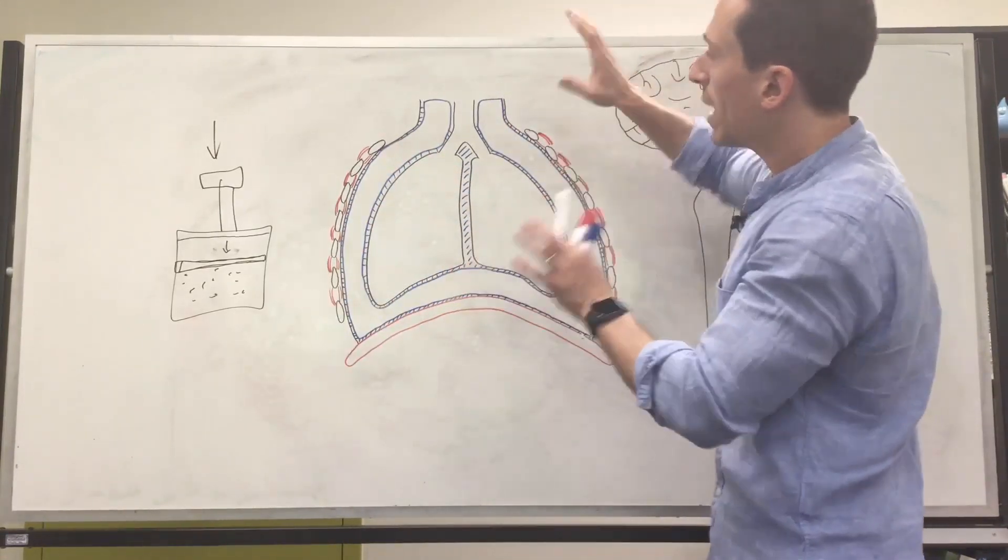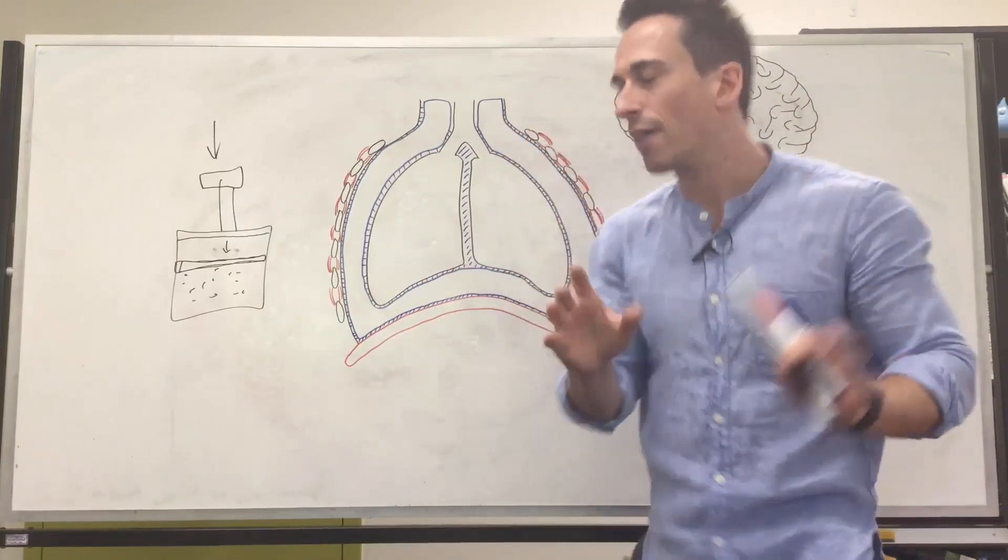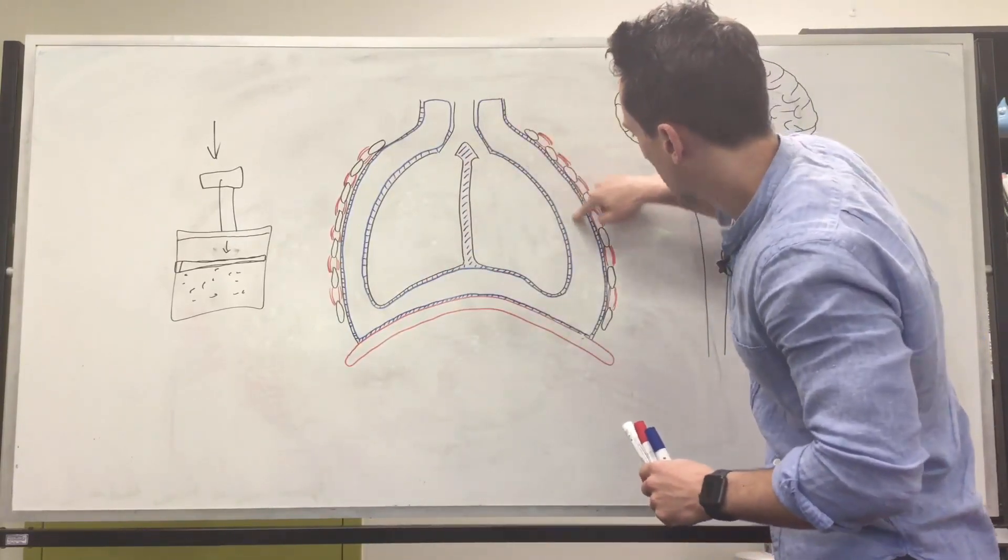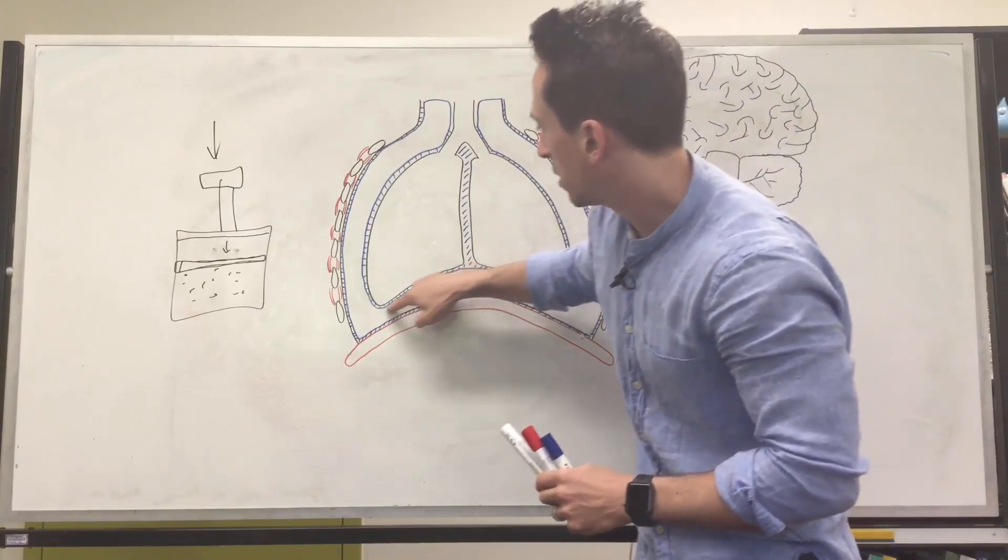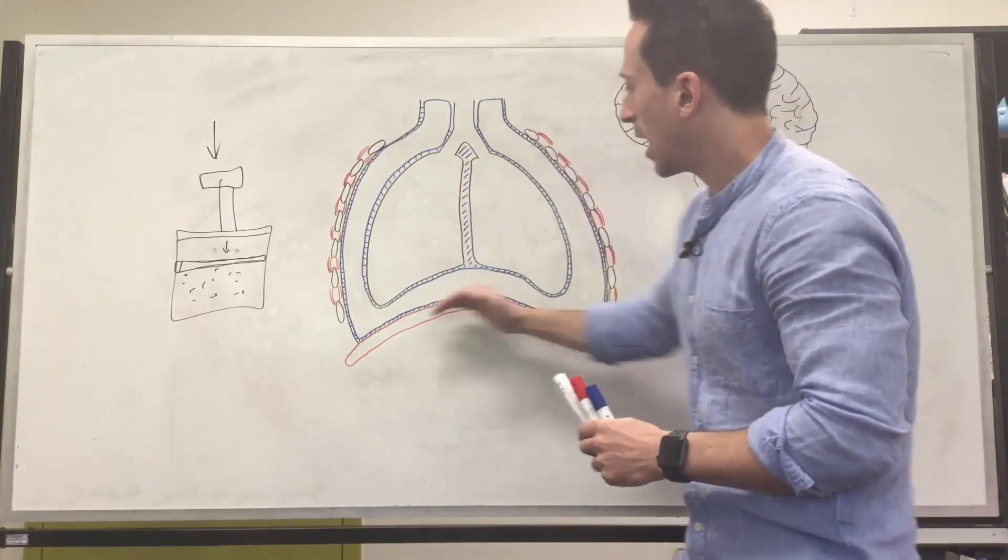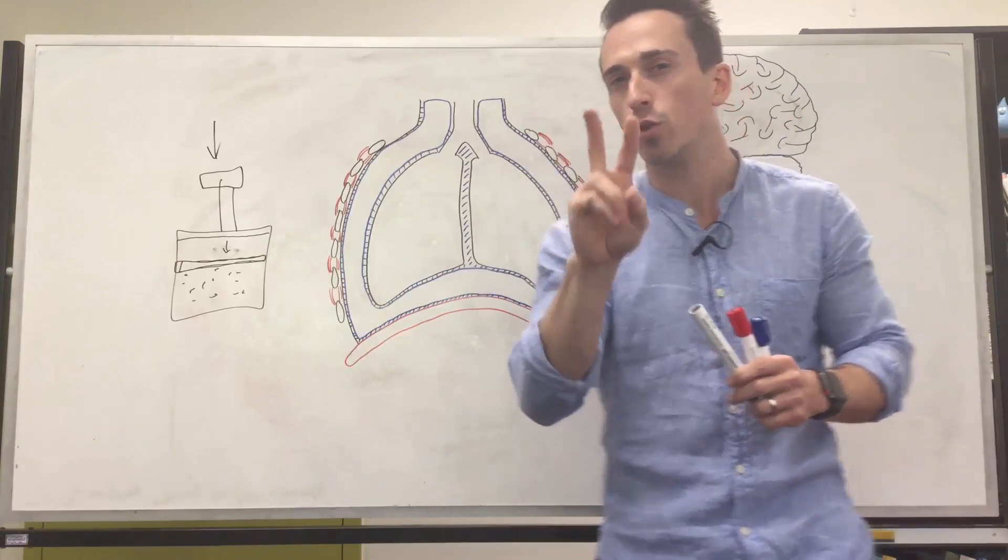Now, I want you to think about this. We have something called the pleural cavity. You can see there's a cavity right here, which sits between the lungs and the rib cage and the diaphragm. And the cavity is made up of two membranes.